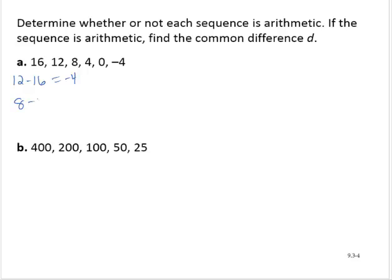What is 8 minus 12? Negative 4. 4 minus 8? Negative 4. 0 minus 4, negative 4. And negative 4 minus 0 is negative 4.